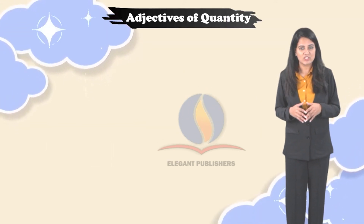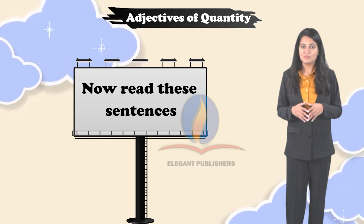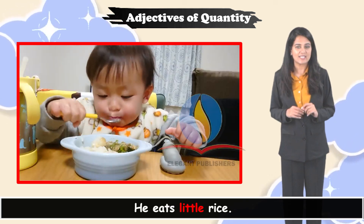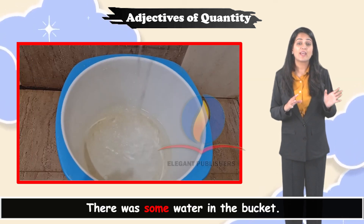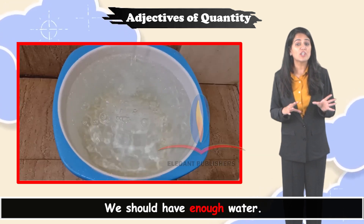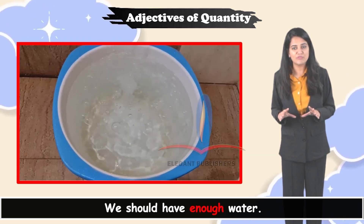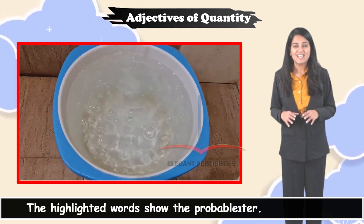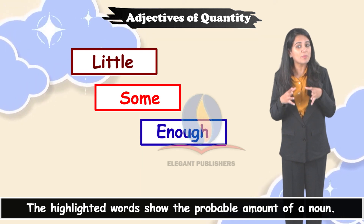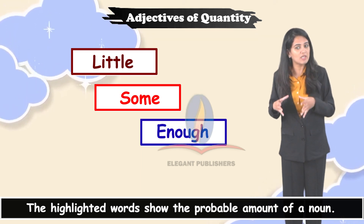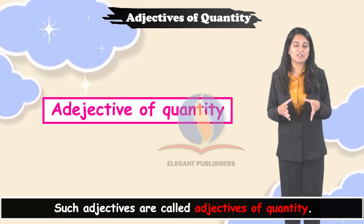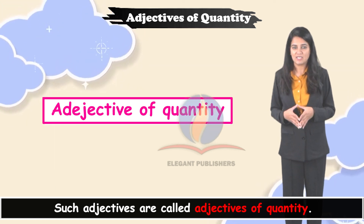Adjectives of quantity. Now read these sentences. He eats little rice. There was some water in the bucket. We should have enough water. The highlighted words show the probable amount of a noun. Such adjectives are called adjectives of quantity.